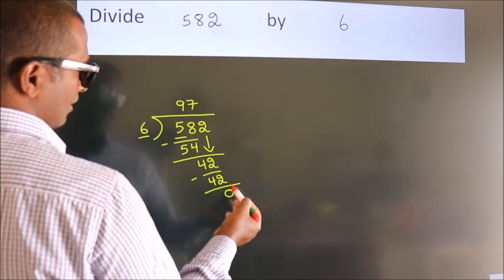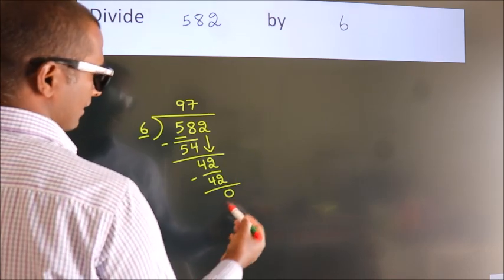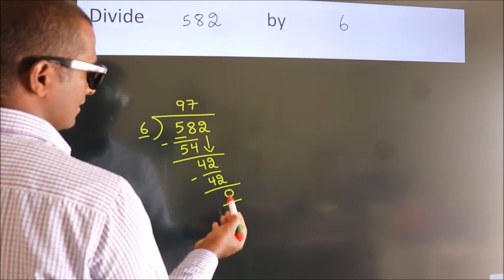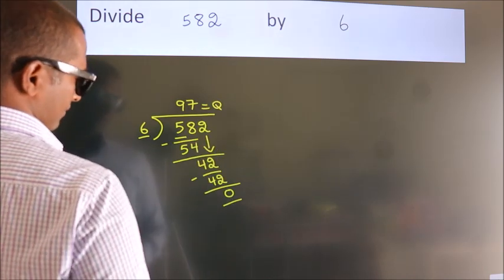After this, no more numbers to bring down and we got remainder 0. So this is our quotient. Here we go. Thank you.